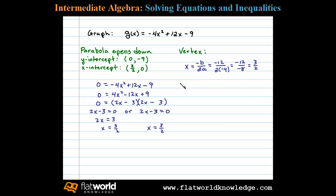Now to find the corresponding y value, we need to determine g(3/2). We can do that by substituting 3/2 here for each instance of x. And so doing that we can see here we have -4 times (3/2)² which is 9/4, plus...